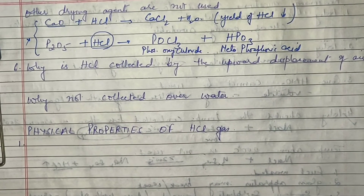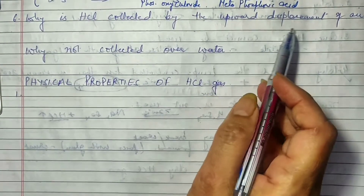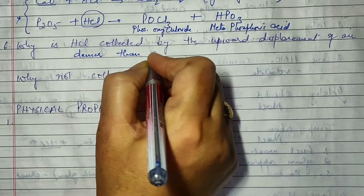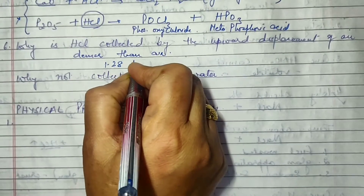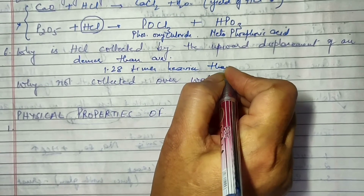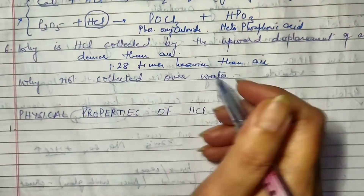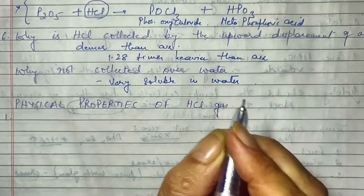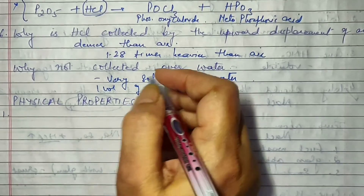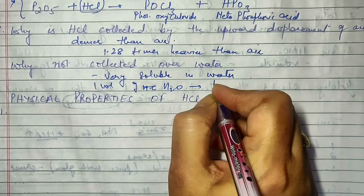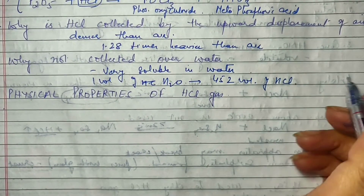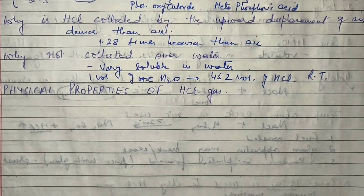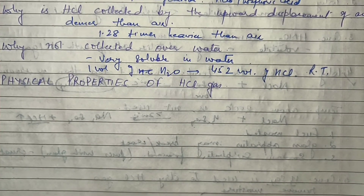So, why can't we use calcium oxide or P₂O₅ for drying HCl gas? Because they react with HCl and reduce its yield. Why is HCl collected by upward displacement of air? Because it is denser than air — about 1.28 times heavier than air. Why is it not collected over water? Because it is very highly soluble in water — at room temperature, one volume of water dissolves 452 volumes of HCl. That is why water is avoided for its collection.